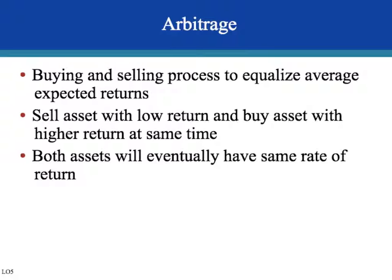For example, two similar companies both selling iPhone case covers issue stock. Company A gives 5% return and company B gives 10% return. At first, investors buy shares of company B because the rate of return is higher. This bids up the stock price, so company B's rate of return starts to fall. Investors then sell their company A stock — its price goes down and its rate of return goes up — and this continues until both companies offer an equal rate of return.